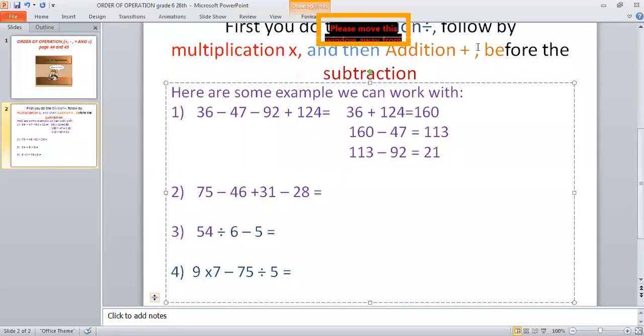Now, in this next case, we have 75 minus 46 plus 31 minus 28. What are we going to do first? We're going to start from the beginning because we don't have the multiplication or the division sign. So we're going to take 75 minus 46. What's going to be your answer?